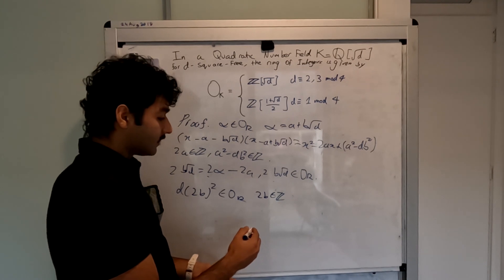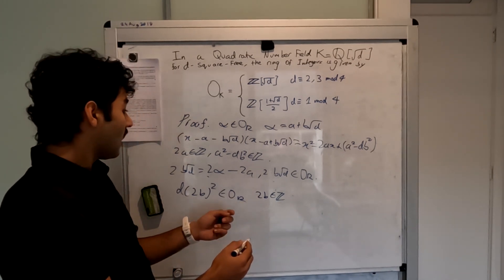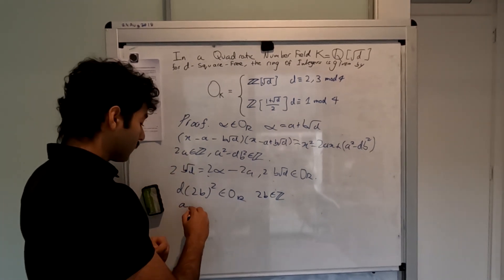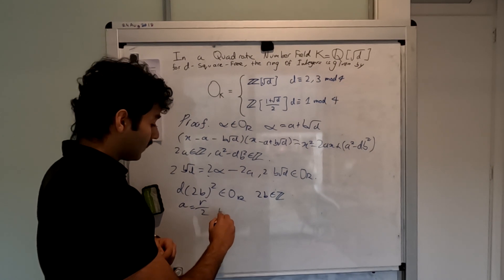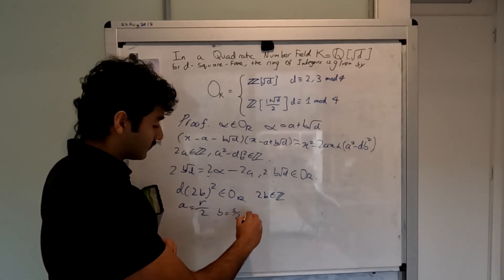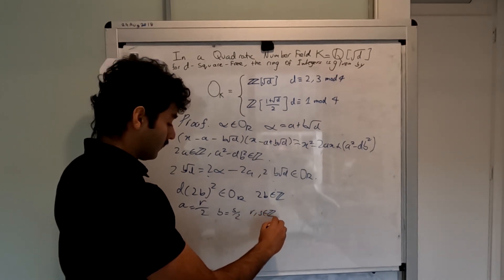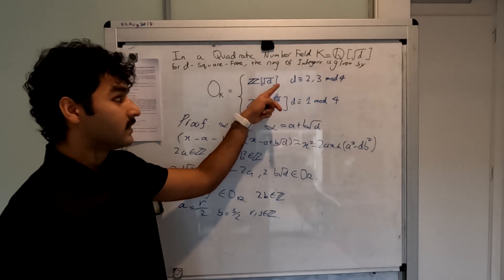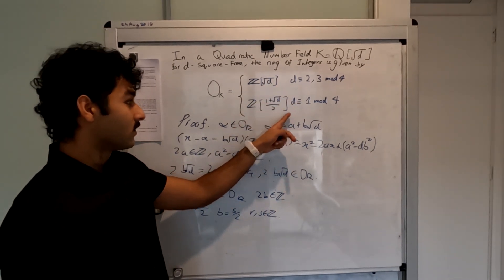So then we have that both 2b and 2a are integers, so a equals r over 2 and b equals s over 2 for some integers r and s. Now we break off into our two cases: when d is congruent to 2 or 3 mod 4, and when d is congruent to 1 mod 4.